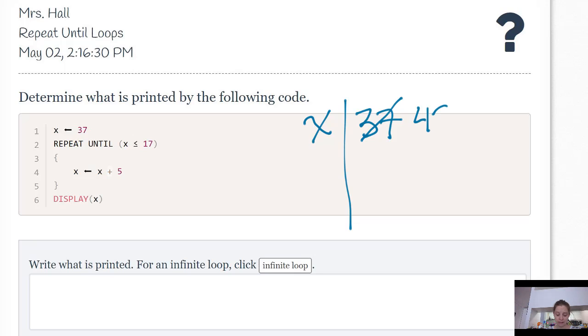Let me check your condition. Repeat until x is less than or equal to 17. It's not less than or equal to 17, so I go inside the loop. x gets x plus 5. x is 47. Check. Repeat until x is less than or equal to 17.